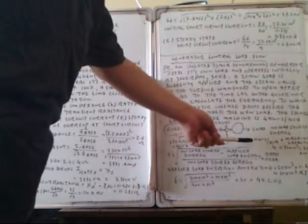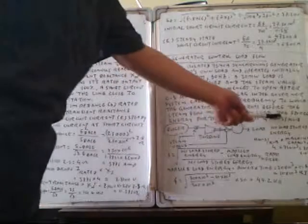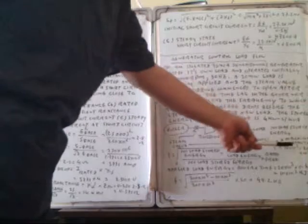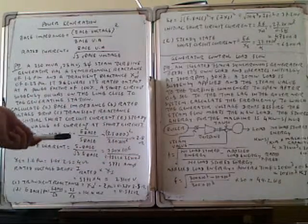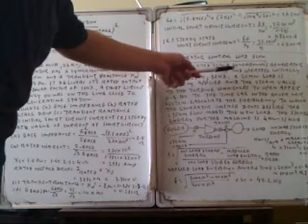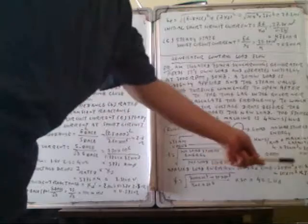The normal stored energy is calculated as: stored energy constant (4 kW·s/kVA) multiplied by machine capacity. The machine capacity is 75 MVA = 75 × 10³ kVA, so normal stored energy = 4 × 75 × 10³ = 300 × 10³ kW·s.